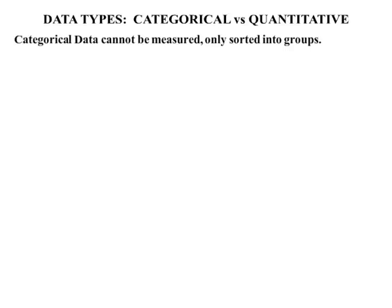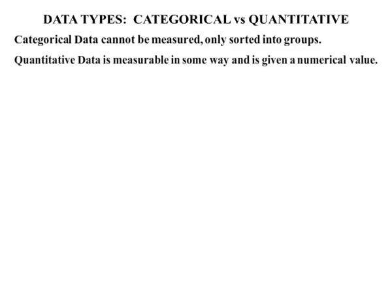In this lesson we're looking at data types, in particular categorical versus quantitative. Categorical data cannot be measured — it can only be sorted into groups. Whereas quantitative data is measurable in some way and is given a numerical value, a number.